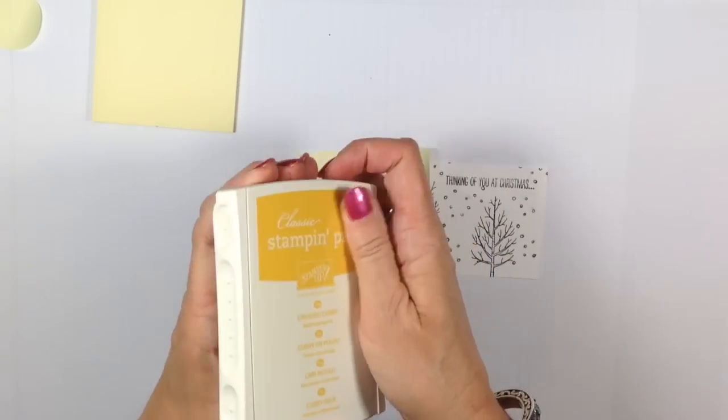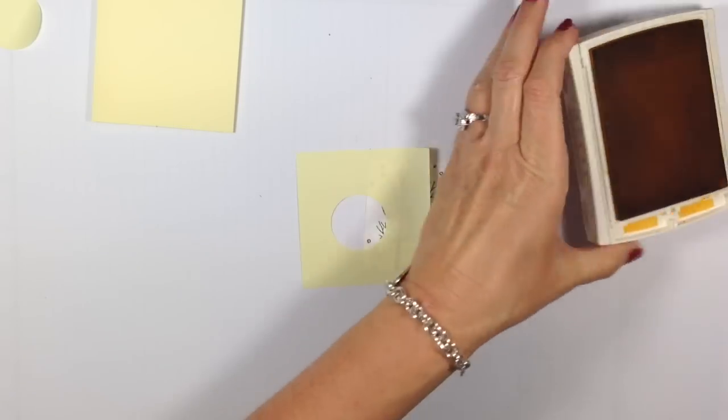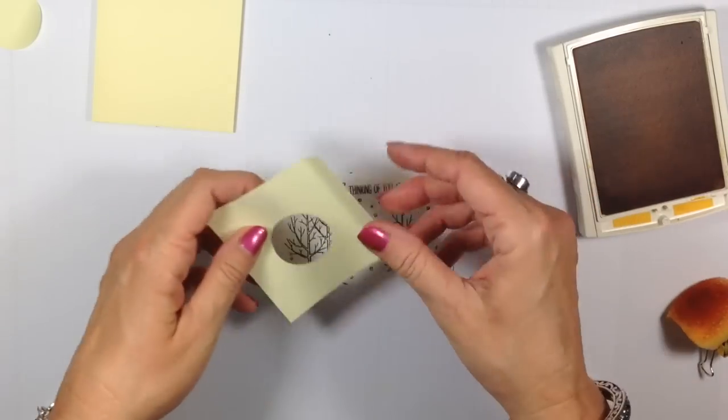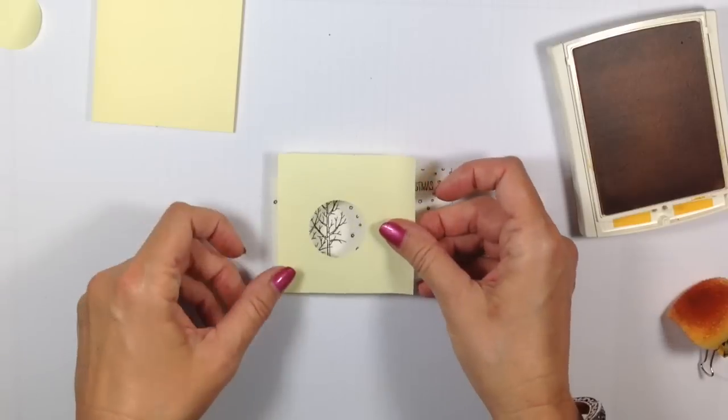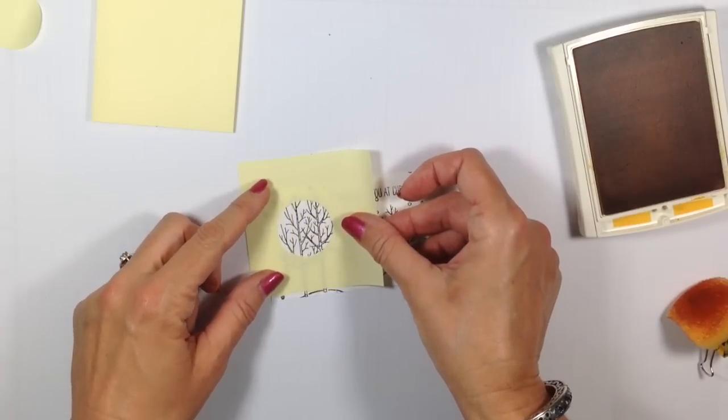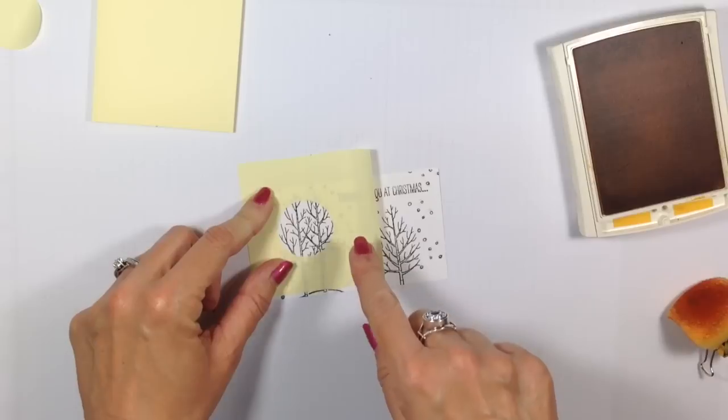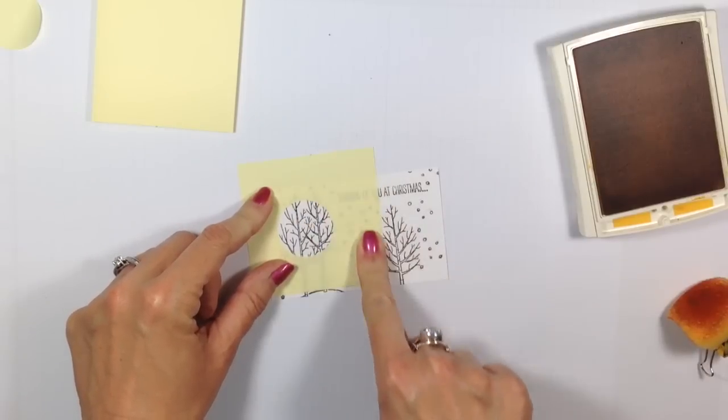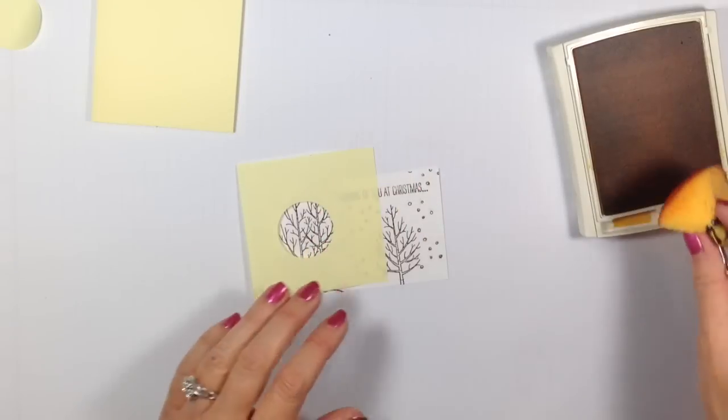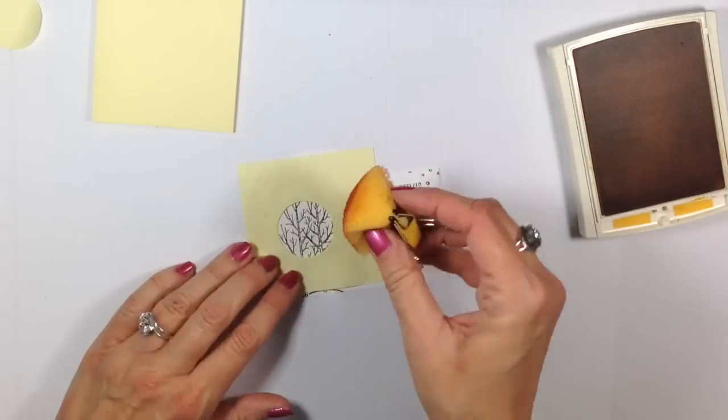Now I'm going to take another Post-it note and go right smack in the middle - no need to measure or anything. We're really just using this as a mask. Now I'm going to come in with a Crushed Curry ink pad and a stampin' sponge.